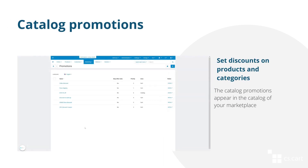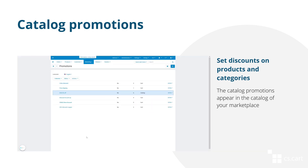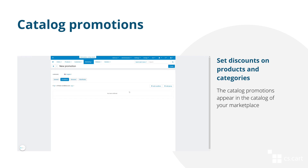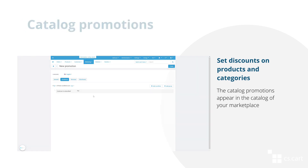Set discounts on products and product categories. This type of promotion is called Catalog Promotions. They appear right in the catalog, on product and category pages. Among the possible conditions are product price, product category, the user group to which the discount will be displayed, and so on. For example, you can make the promotion only for those users who are subscribed to your newsletters.